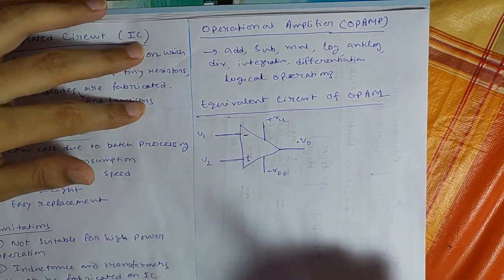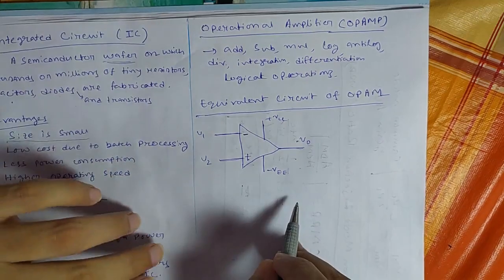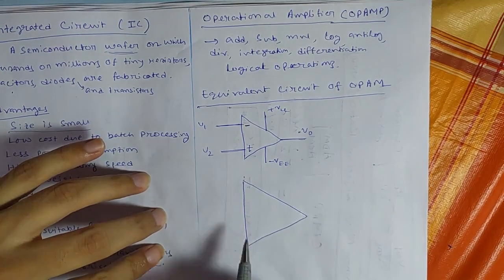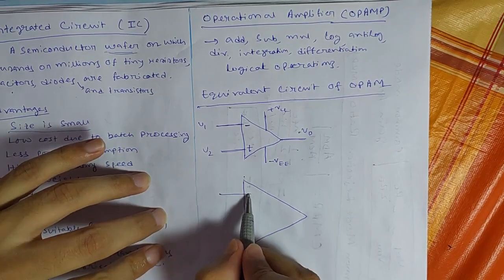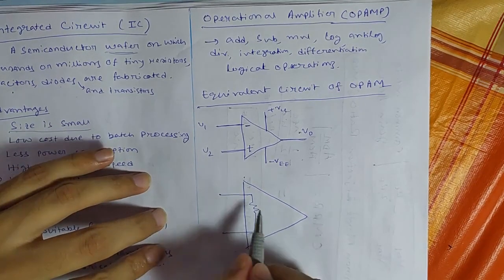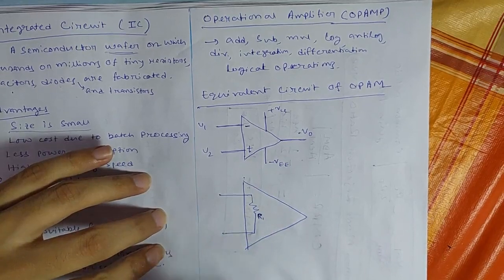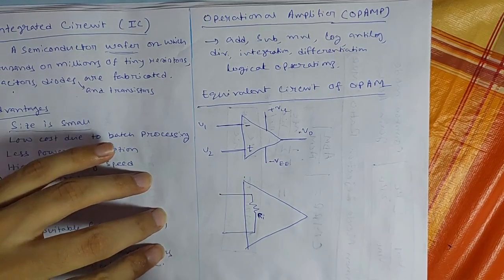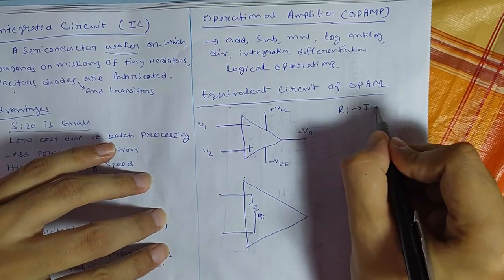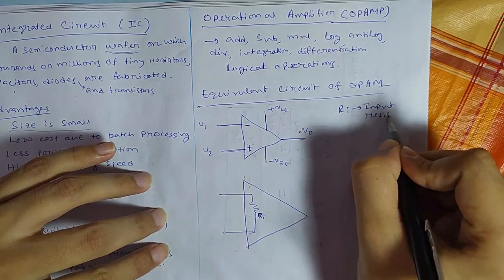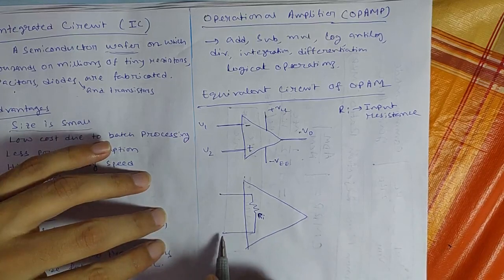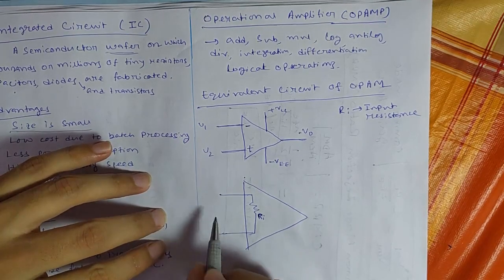Now if I draw the electrical equivalent circuit, electrical equivalent of this, it will be something like this. There will be a resistance that is RI, which is the resistance seen by looking at this terminals.